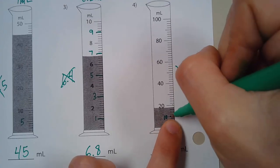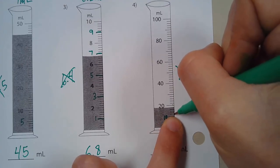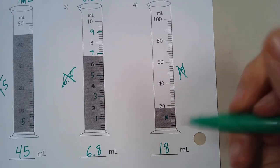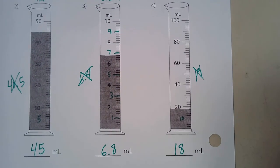So you can go up to the number 10, and the next line up would be 12, 14, 16, 18. This graduated cylinder holds 18 milliliters of liquid.